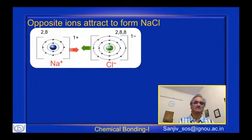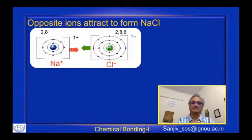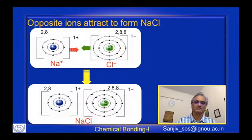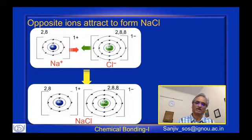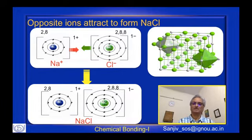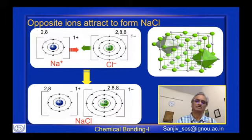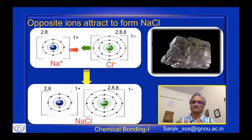The sodium cation and chloride anion, being oppositely charged, attract each other through electrostatic interaction. In practice, a large number of sodium ions and chloride ions combine together to form a lattice of sodium chloride. In the NaCl crystal lattice, each sodium ion is surrounded by six chloride ions in an octahedral arrangement, and similarly, each chloride ion is surrounded by six sodium ions. That is the structure of the NaCl crystal.